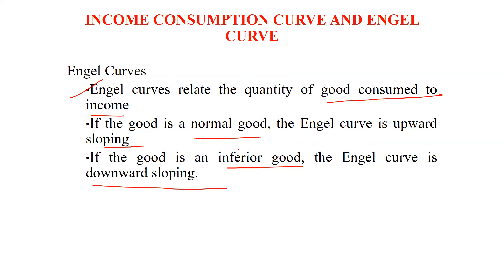Why? Because normal goods are the necessary or standard items. But inferior goods — as our income increases, our standard increases, so we would like to shift from inferior goods to superior goods. For example, a person who was using refined oil may now want to use desi ghee or olive oil, but earlier could not consume it because his income was less. Now that he can afford the olive oil, which is more expensive than simple refined oil, he shifts from refined oil to olive oil. So if the good is an inferior good, the angel curve is downward sloping; if it is a normal good, it is upward sloping.